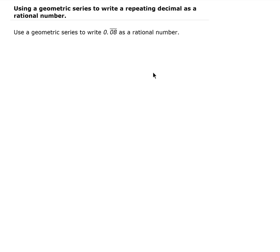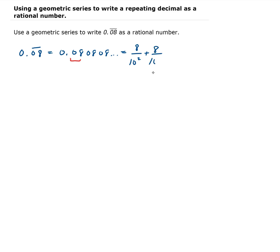So first off, 0.08 repeating is the same as 0.08 repeating. We can write this as: for the first two digits we have 8 over 10 squared — that's 8 over 100, which gives us 0.08. Then we add another 8 over 10 squared, so it's going to give us 8 over 10 to the fourth.